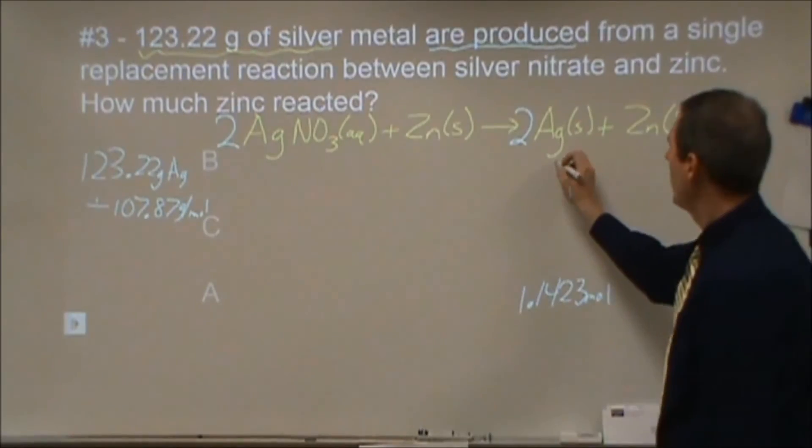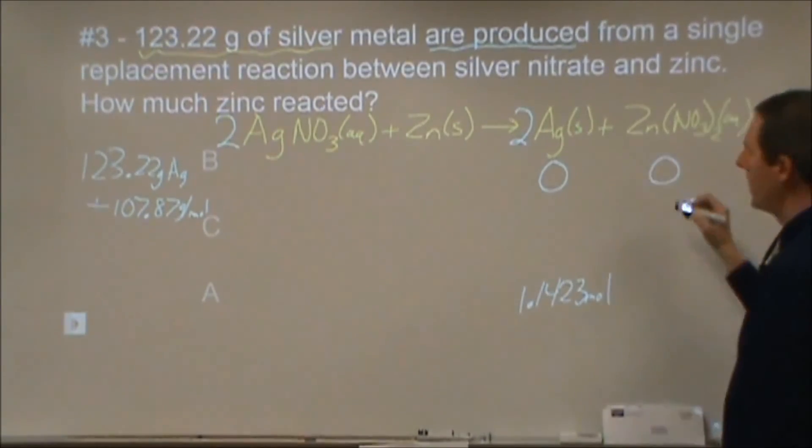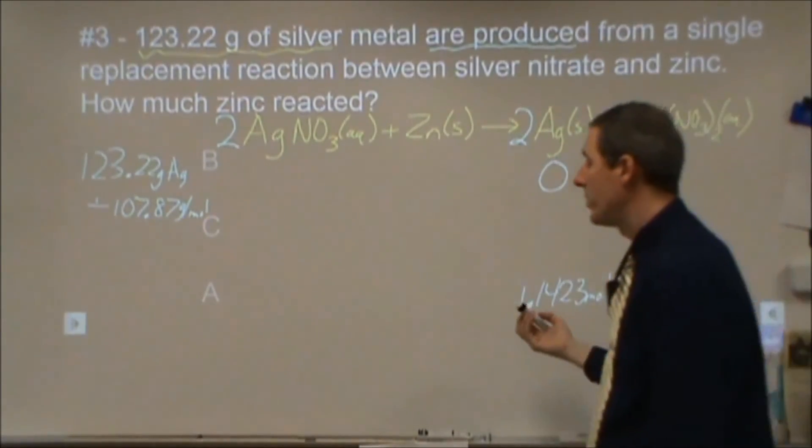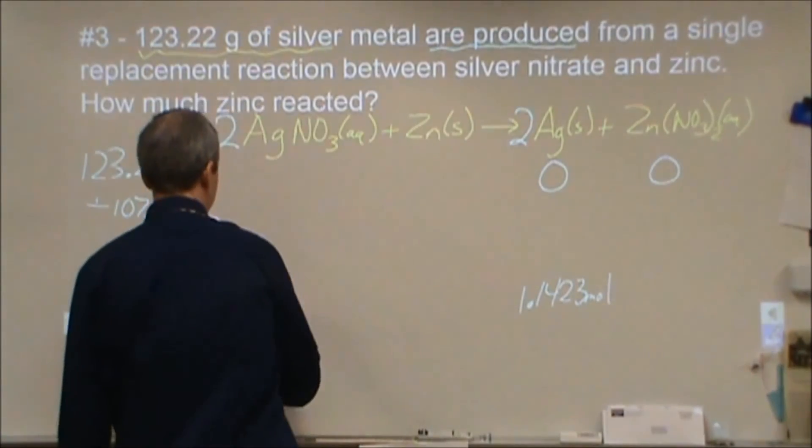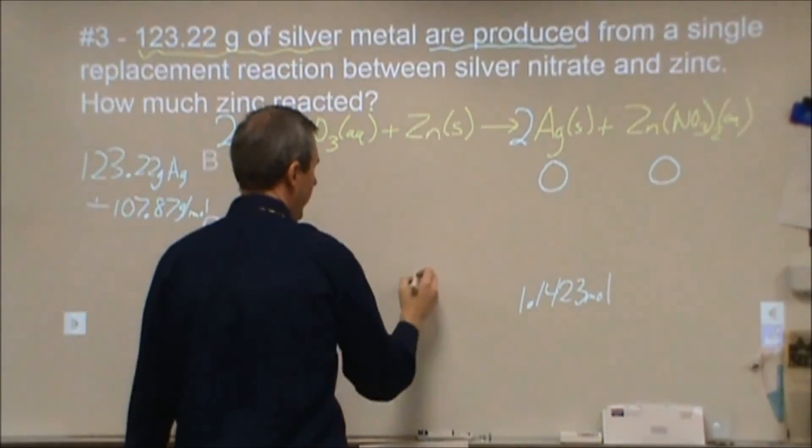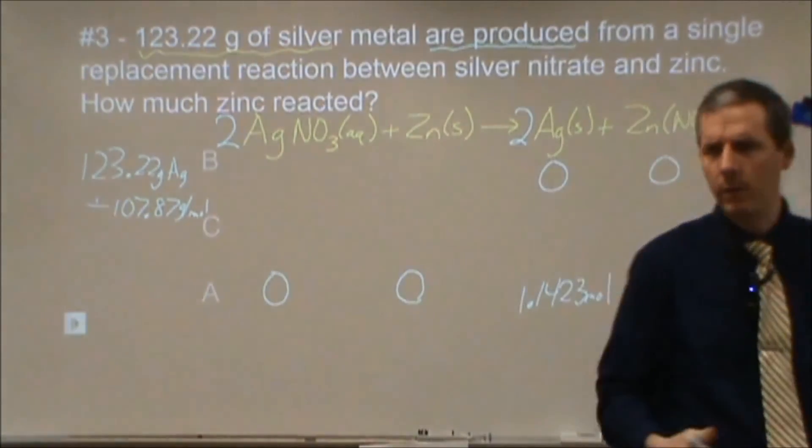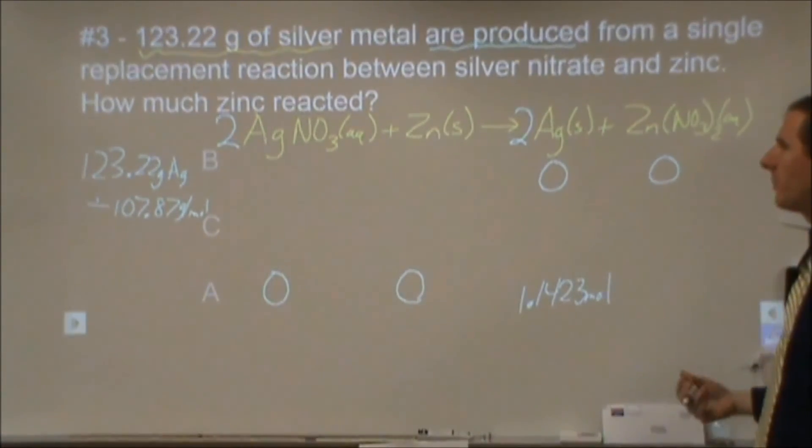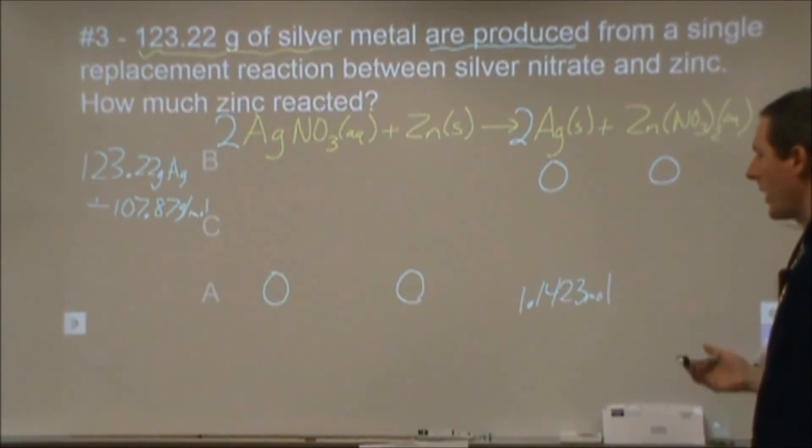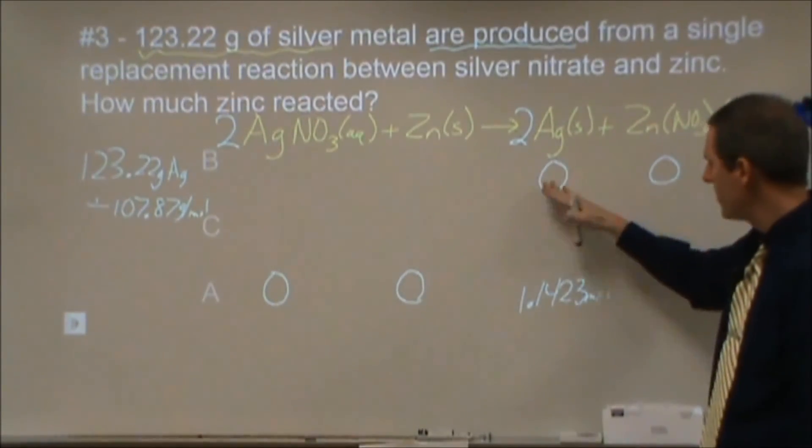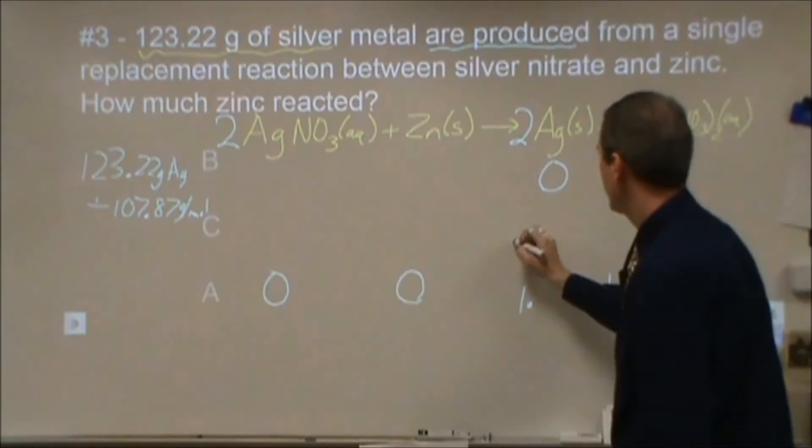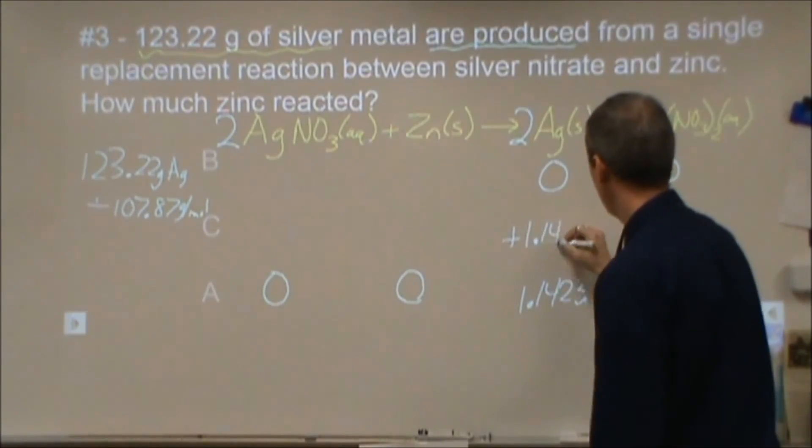We're going to assume that we started with zero silver, zero zinc nitrate. We're also going to assume for the time being that we ended with zero of each reactant. It doesn't tell us which one is in excess. We're going to assume they reacted perfectly for a minute and consumed up every single reactant there. For our change, we're going from zero to this value, so we're gaining 1.1423.